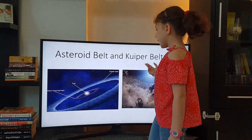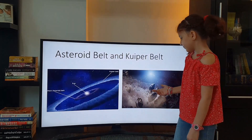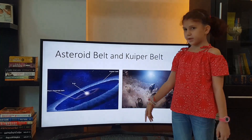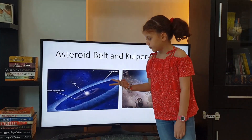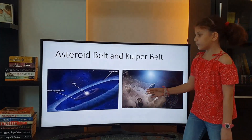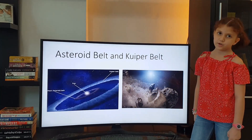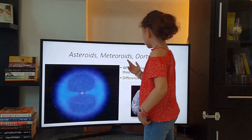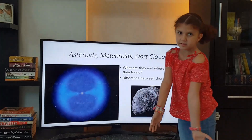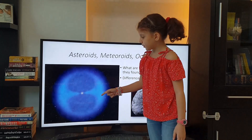The asteroid belt and the Kuiper belt are belts made out of rocks, dust, and gas that orbit the Sun. The Kuiper belt has comets as well. Both the asteroid belt and the Kuiper belt have dwarf planets — the Kuiper belt holding four and the asteroid belt only one. The majority of the asteroid belt and the Kuiper belt are made out of asteroids and meteoroids.